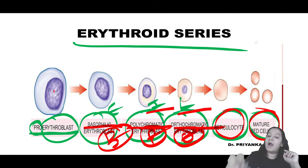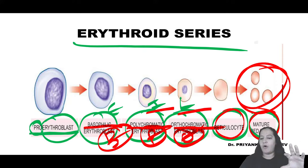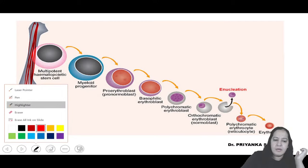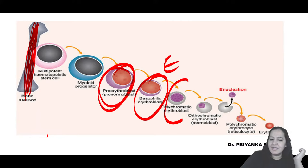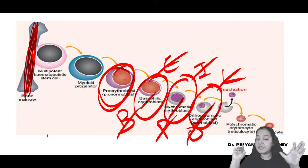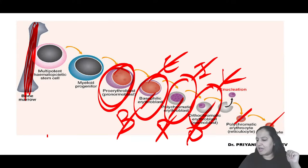All these intermediates are present in the bone marrow. Only the mature RBC comes into the blood. You can see in the bone marrow diagram: this is the first cell pro-erythroblast, then early (basophilic), then intermediate (polychromatic), then late erythroblast (orthochromatic). Then reticulocytes are formed and then RBCs come into the blood. But today I am not teaching anemias; I am teaching leukemias, so my basic concern is WBC formation.